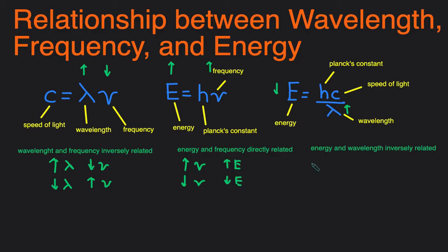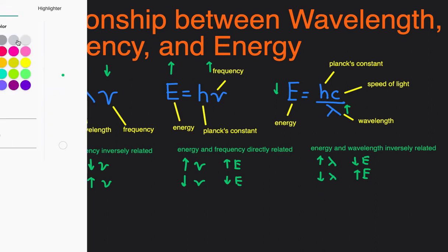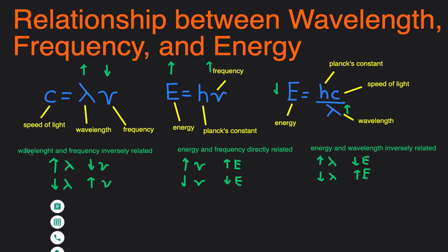So as the wavelength goes up, the energy goes down, and as the wavelength goes down, the energy goes up. Just to summarize, I think this is the easiest way to understand everything. Let's draw out the visible colors in the rainbow — ROYGBIV.